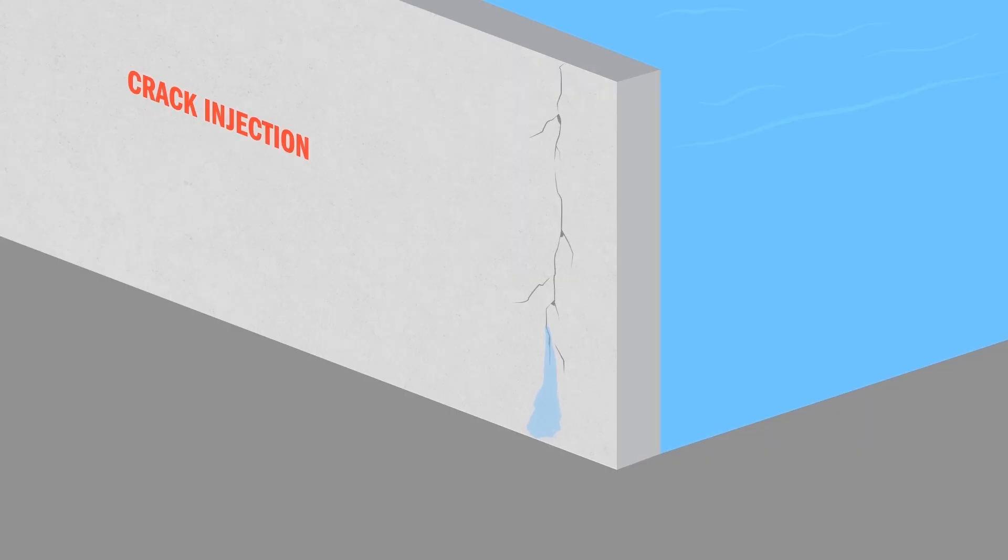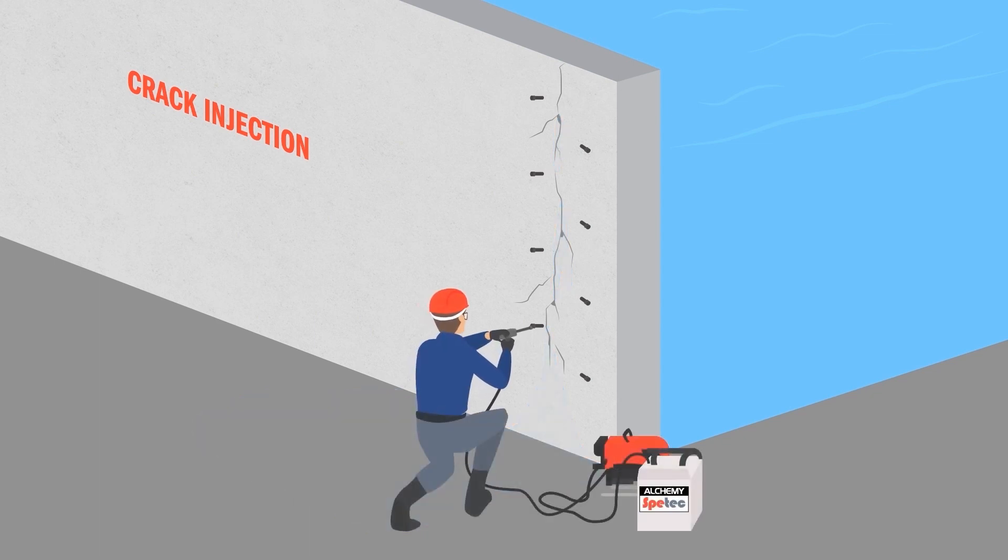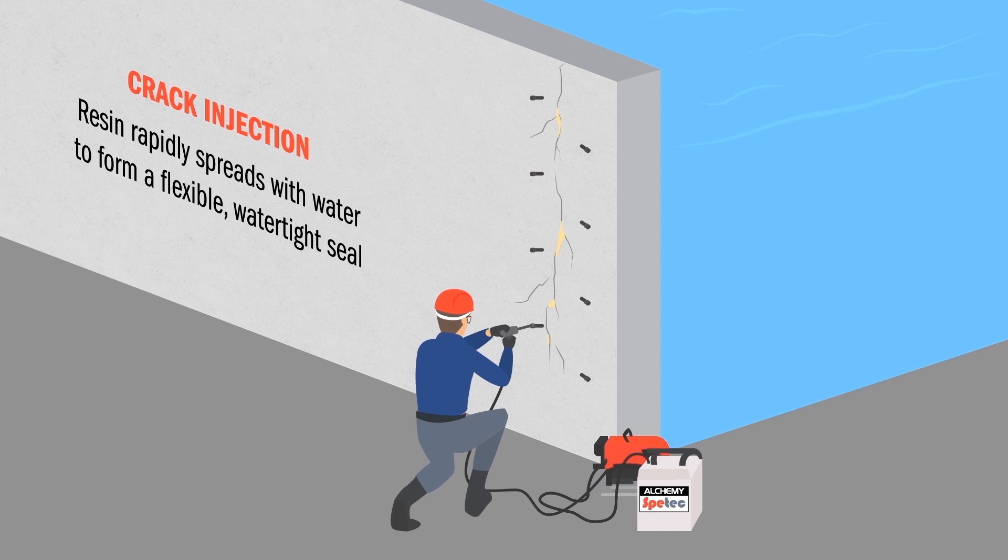Crack injection is a different approach for smaller cracks or joints. They are typically repaired by drilling holes and inserting injection ports at an angle to intersect the crack or joint inside the wall and then injecting directly into the center of the crack or joint through the ports. The resin rapidly reacts with water to form a flexible, watertight seal.